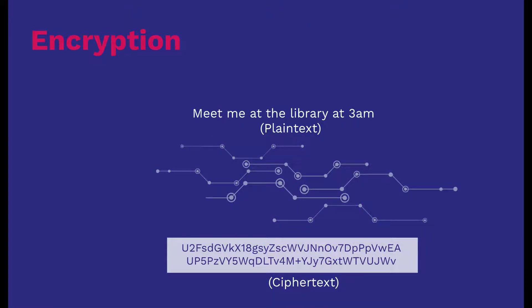First: encryption. That's a foundational concept — you must know it's the process of changing plaintext into ciphertext. For example, 'meet me at the library at 3 a.m.' is the plaintext. It runs through a mathematical encryption algorithm, and once it does, it becomes ciphertext — something that can't be read and in no way resembles the original message. If you encrypt that message and send it over the internet, anyone performing a man-in-the-middle attack would only see the ciphertext. With cryptography, all you're really trying to do is make the plaintext look as far from the original message as possible.